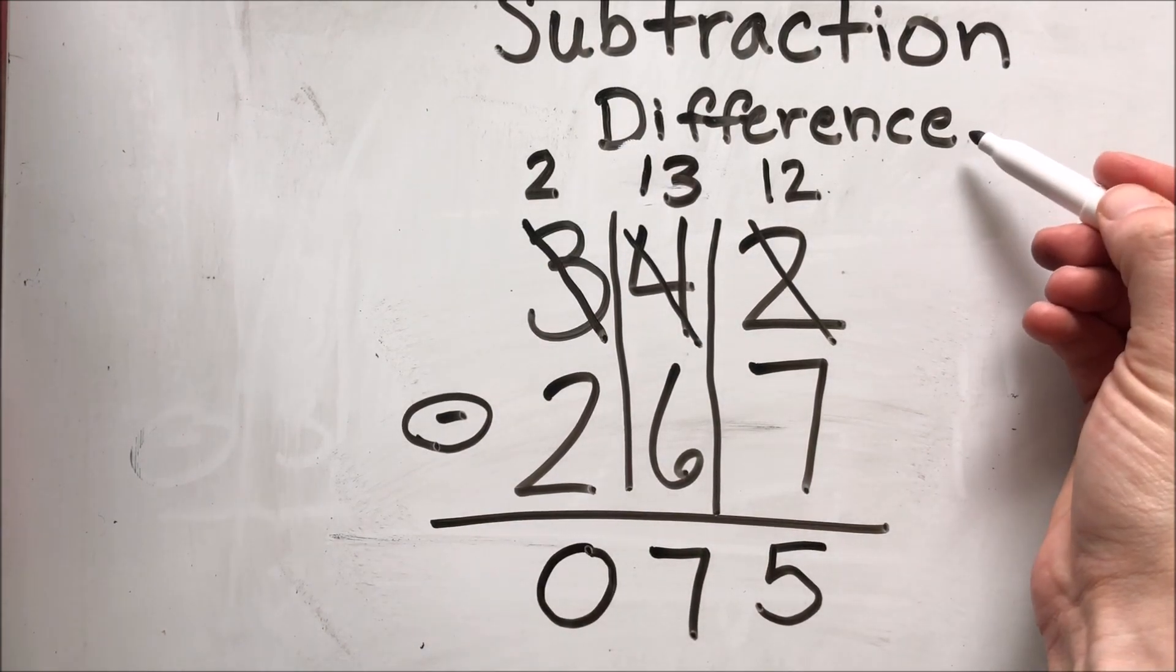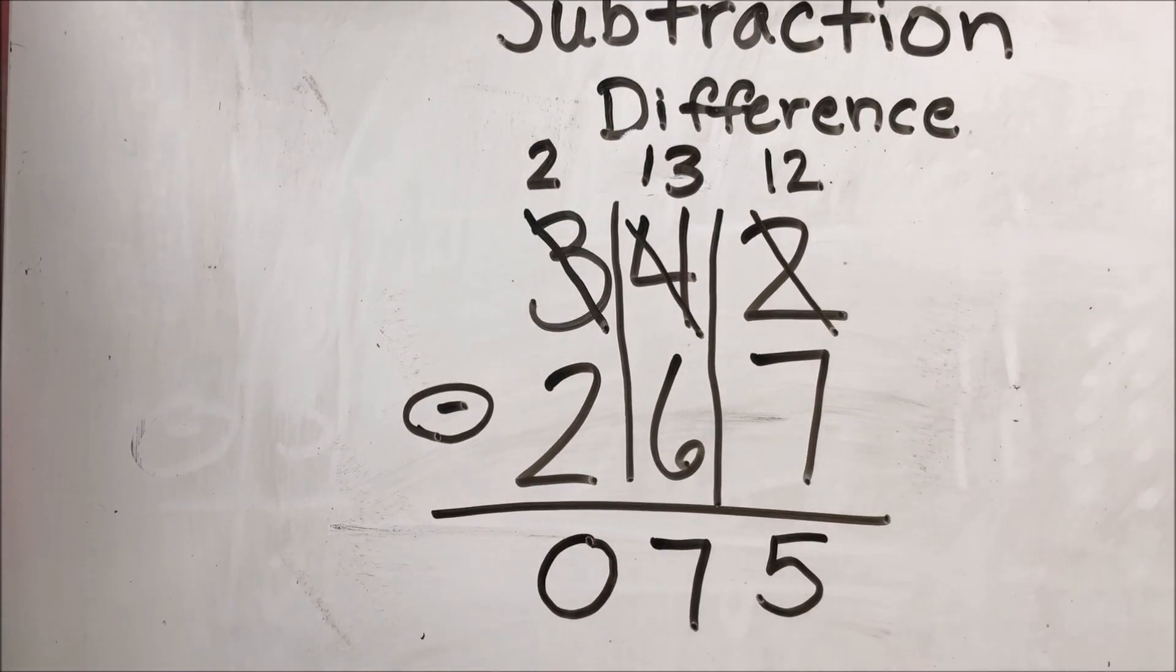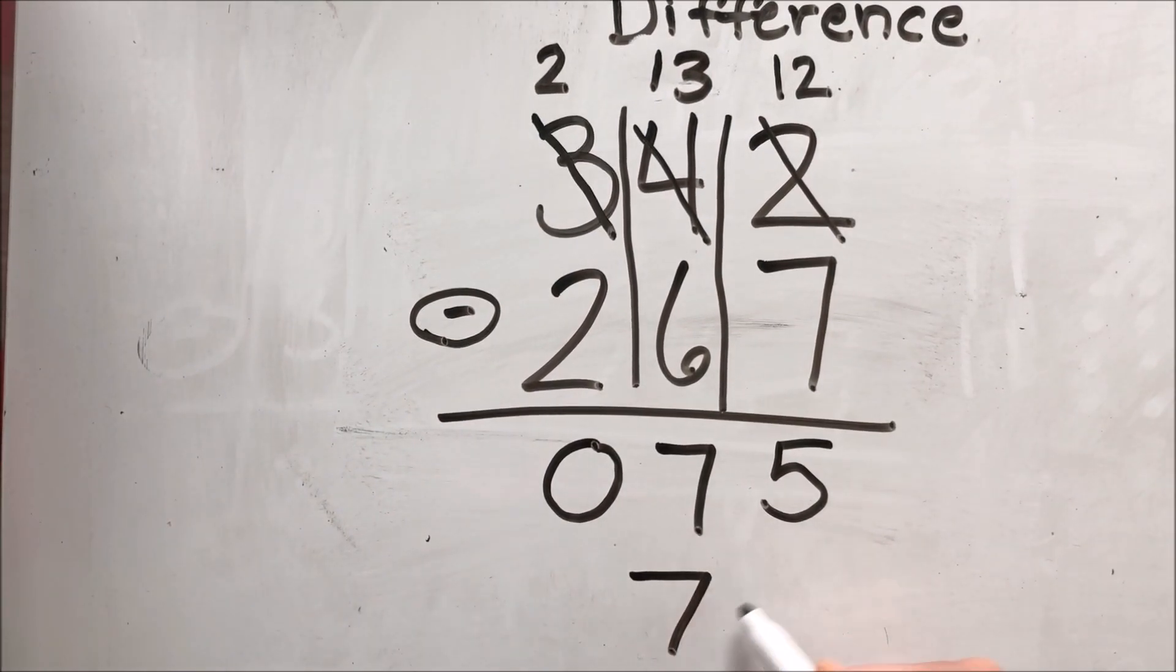My difference, I can write two different ways. I can write zero, seven, five, or I can also just write it 75, because I don't have to have that zero in front.